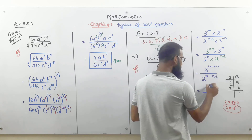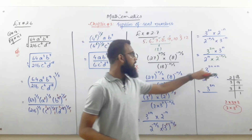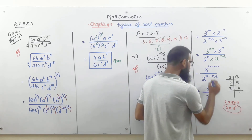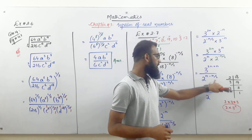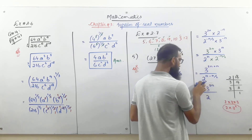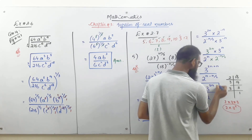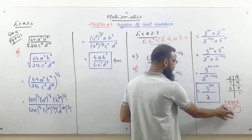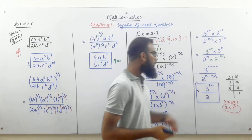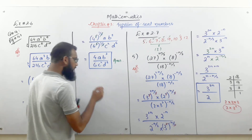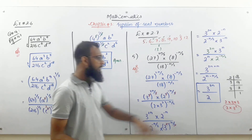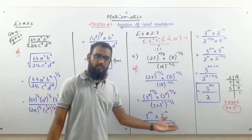So 3 to the power 3n — because 2n plus n equals 3n. Now for 2 to the power n minus n/2, we need to solve this power. We solve the power first and then we get the final answer. What we need to solve right now is n minus n/2. Once this power is solved, the final answer will come.